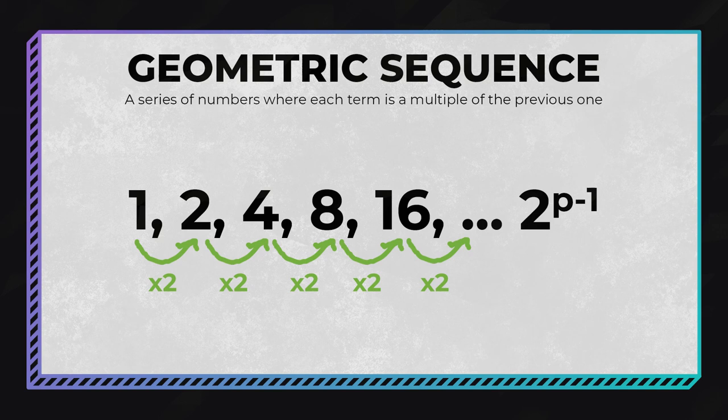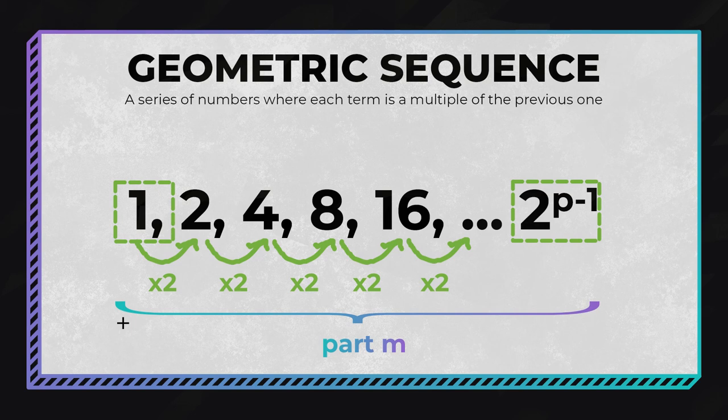The last term of this series is of course part t itself. As we have established, the sum of this series is part m, the Mersenne prime. To make future equations easier to read, I'll refer to part m and part t as m and t.